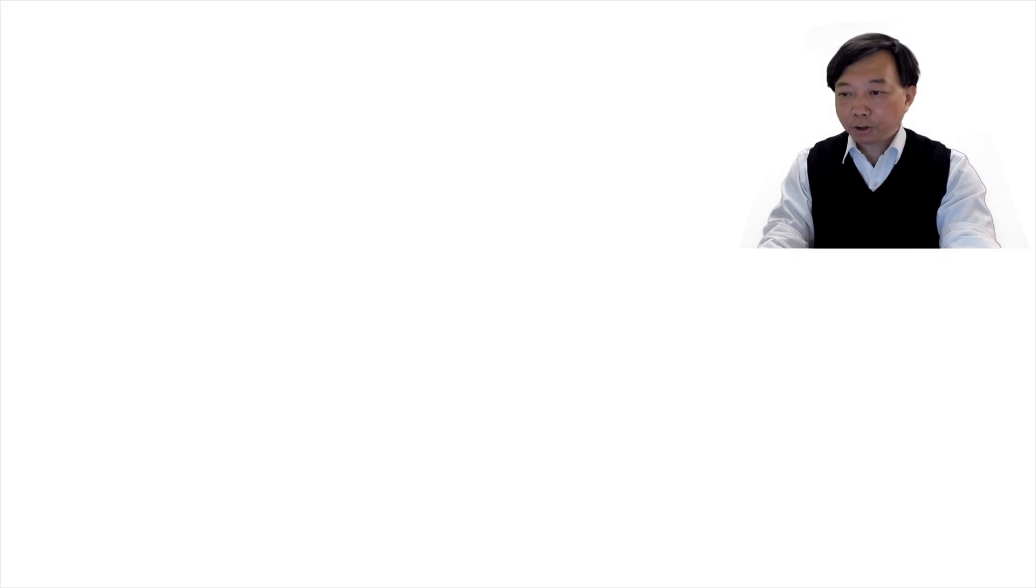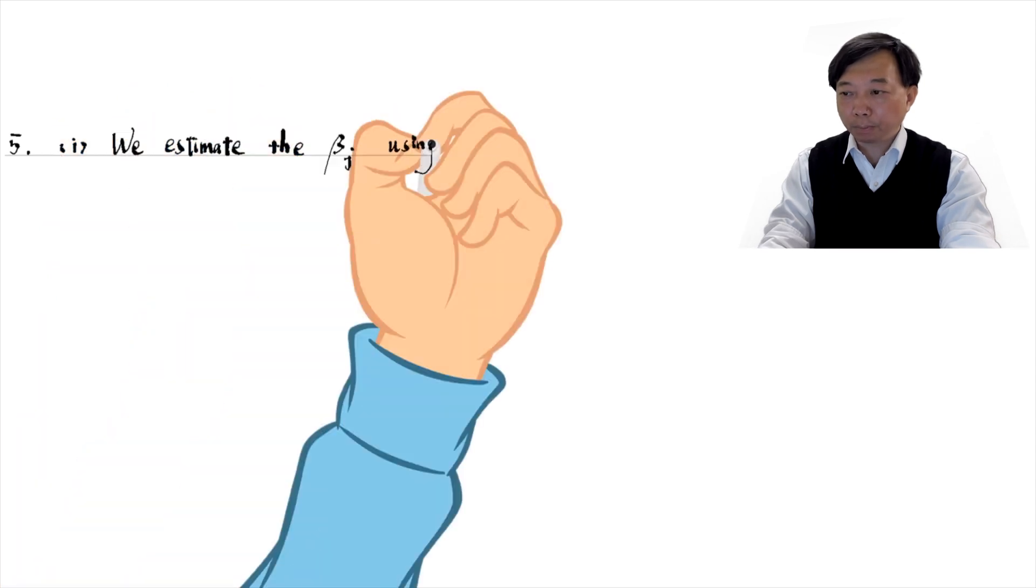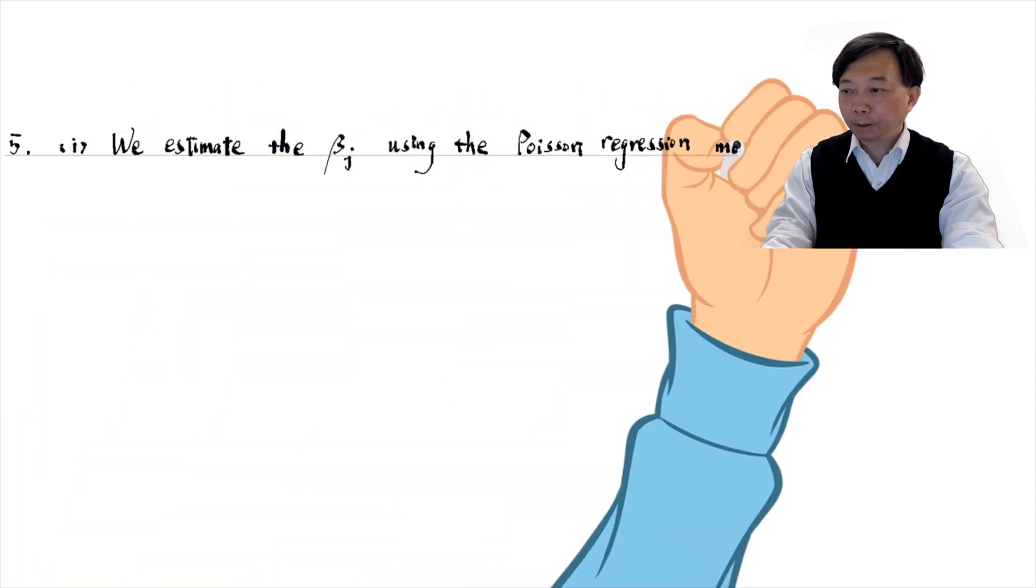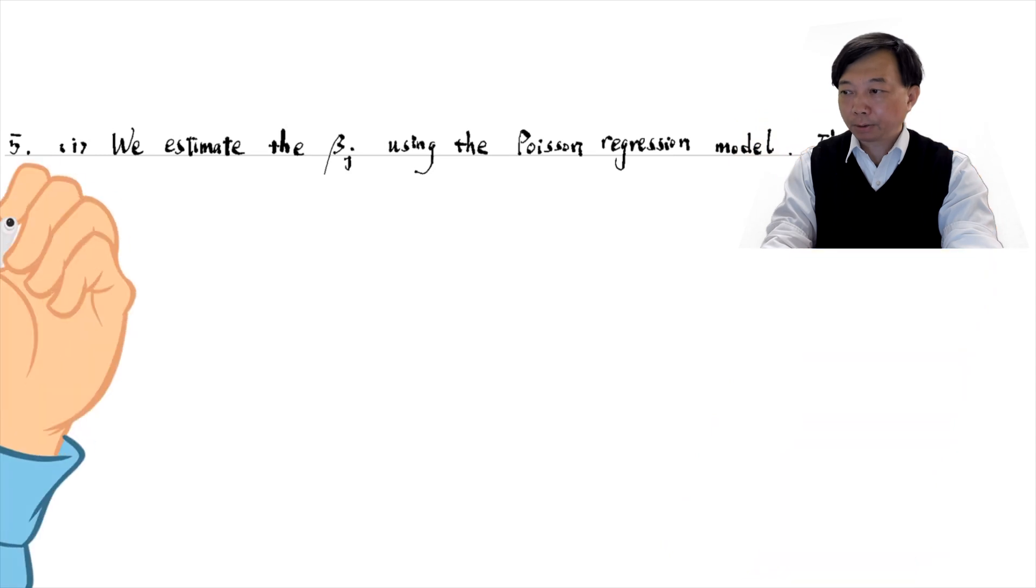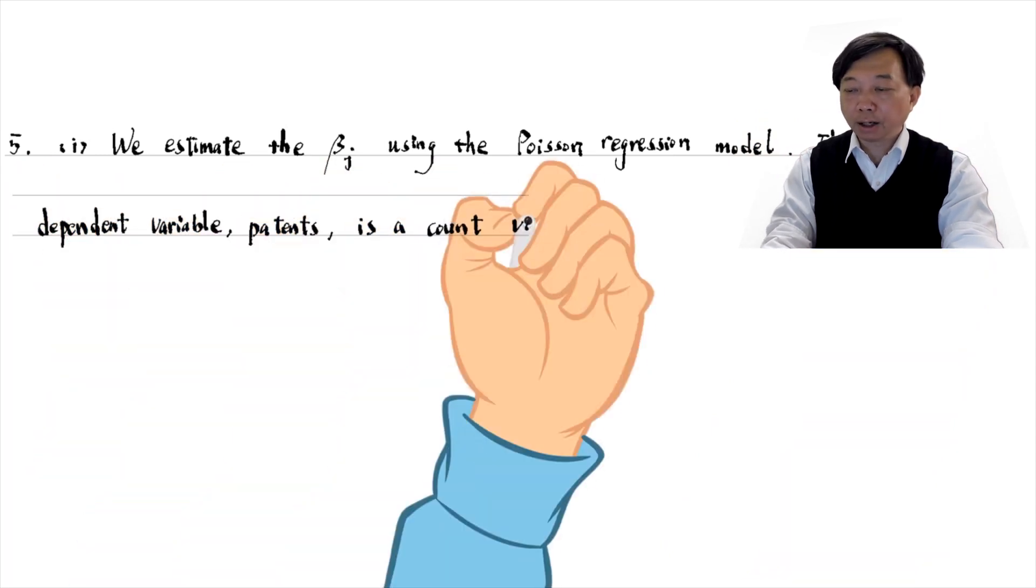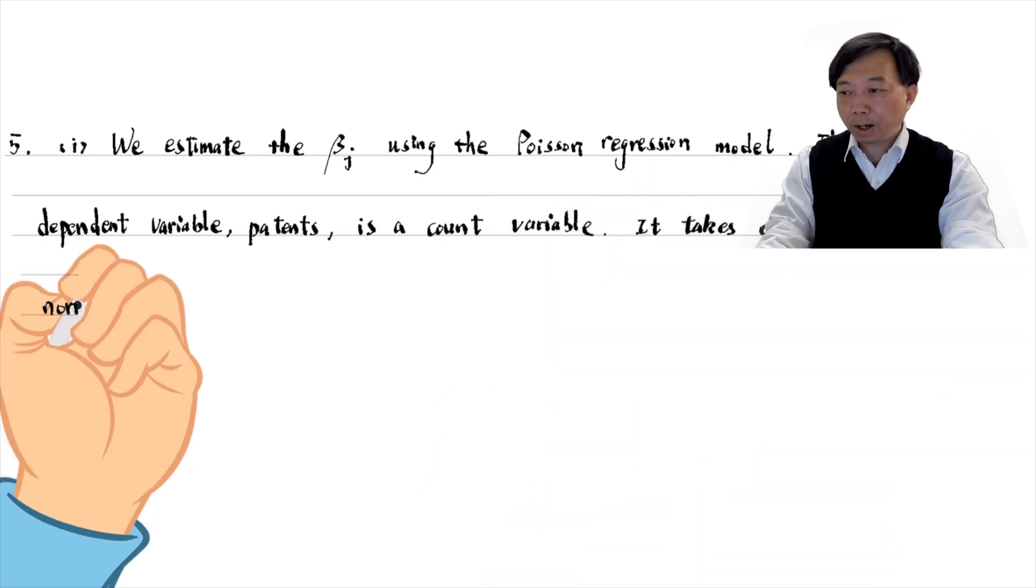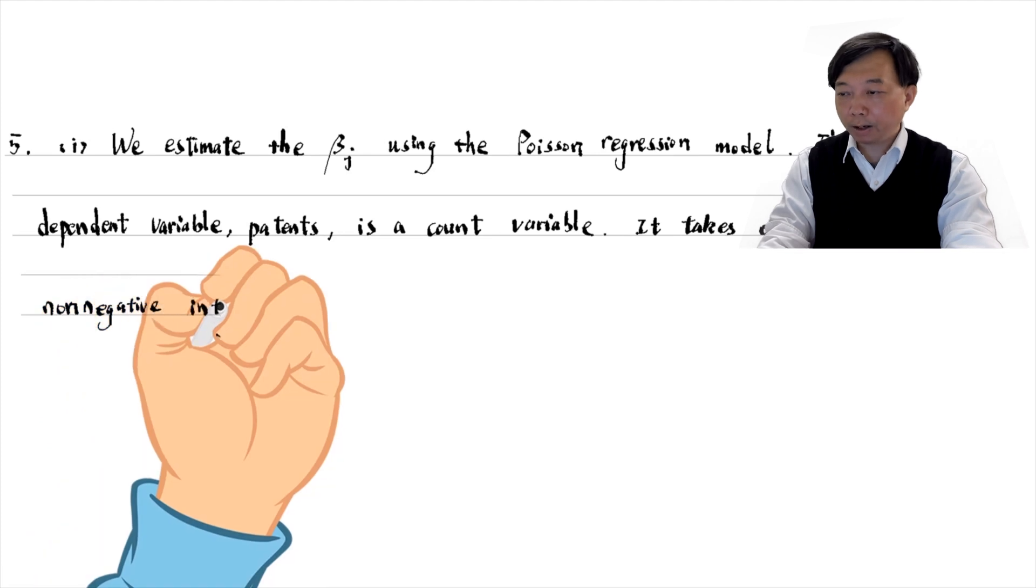We could estimate the patents using the Poisson regression model. The dependent variable, patents, is a count variable. It takes on non-negative integer values. It could be 0 as well as small integer values.